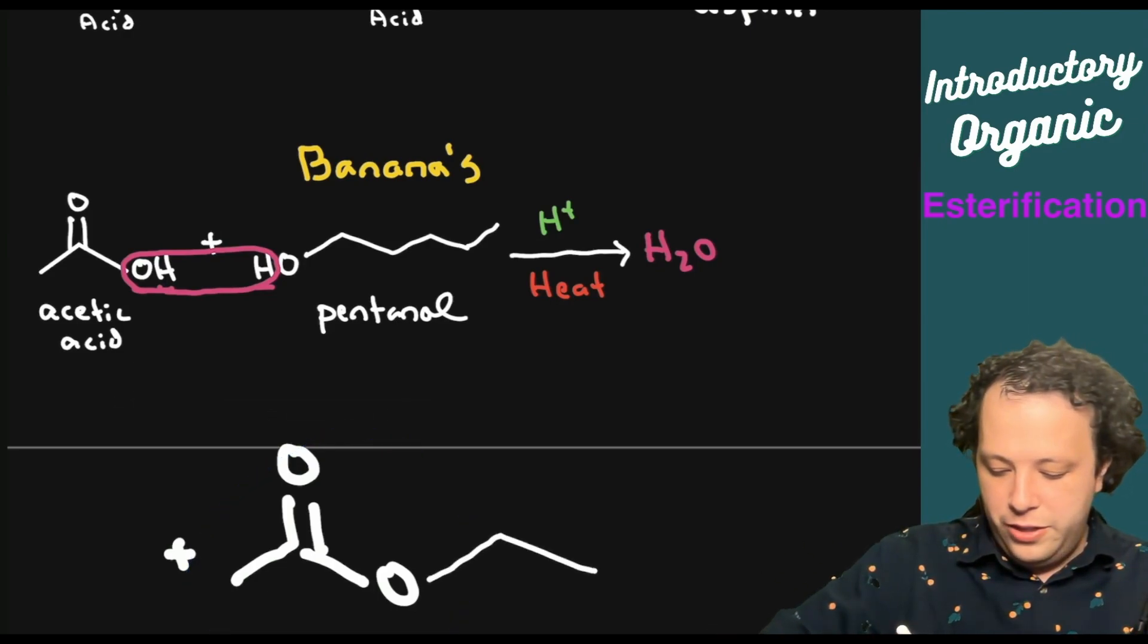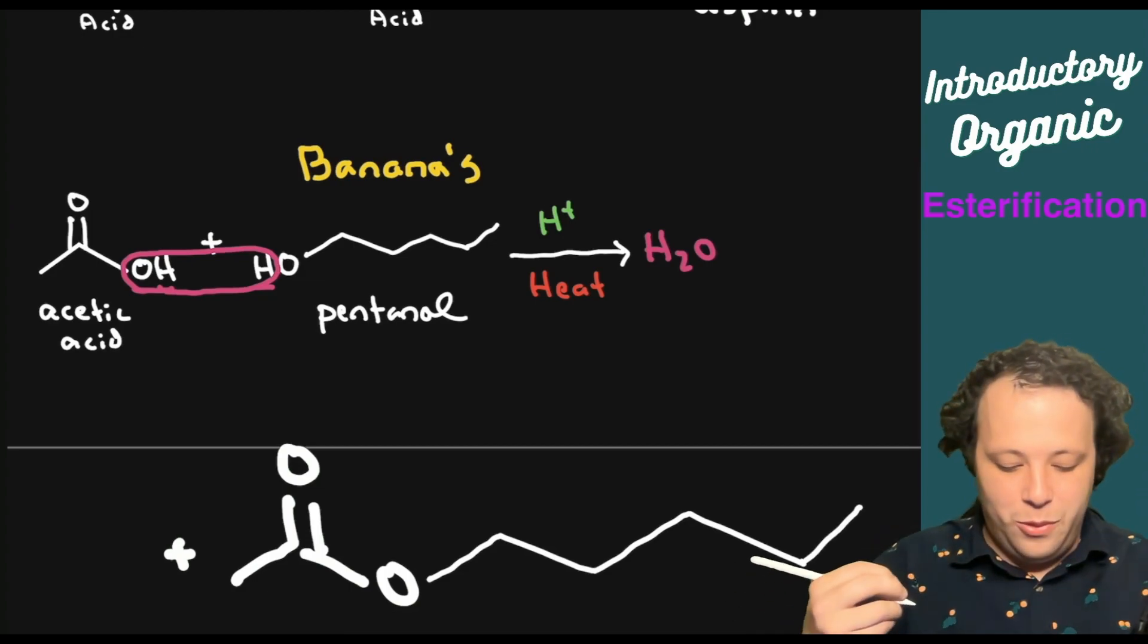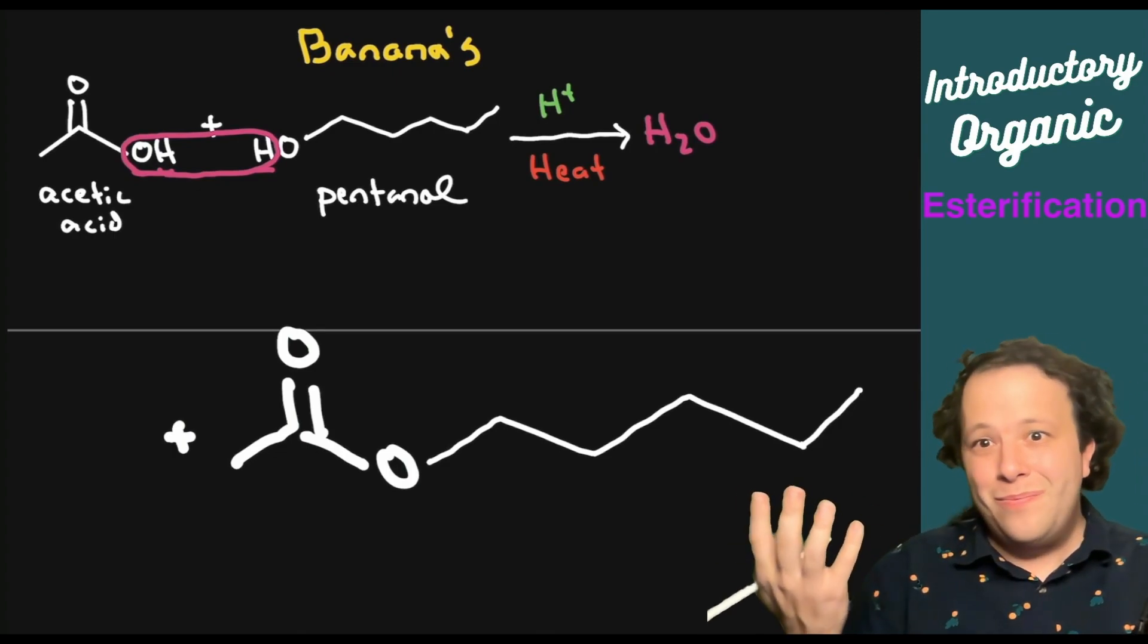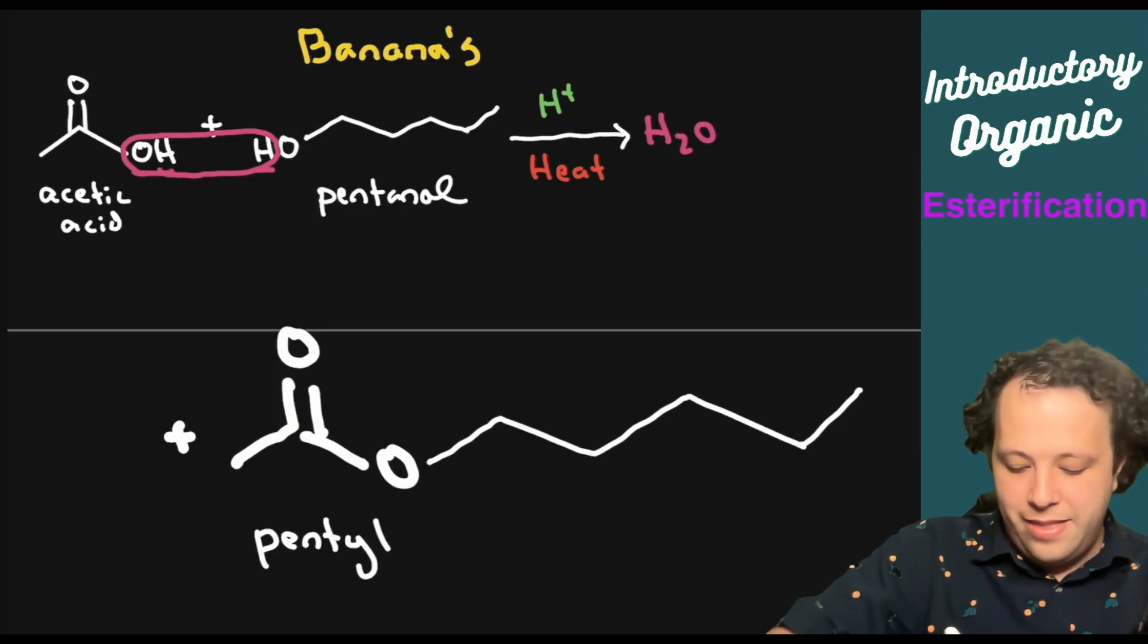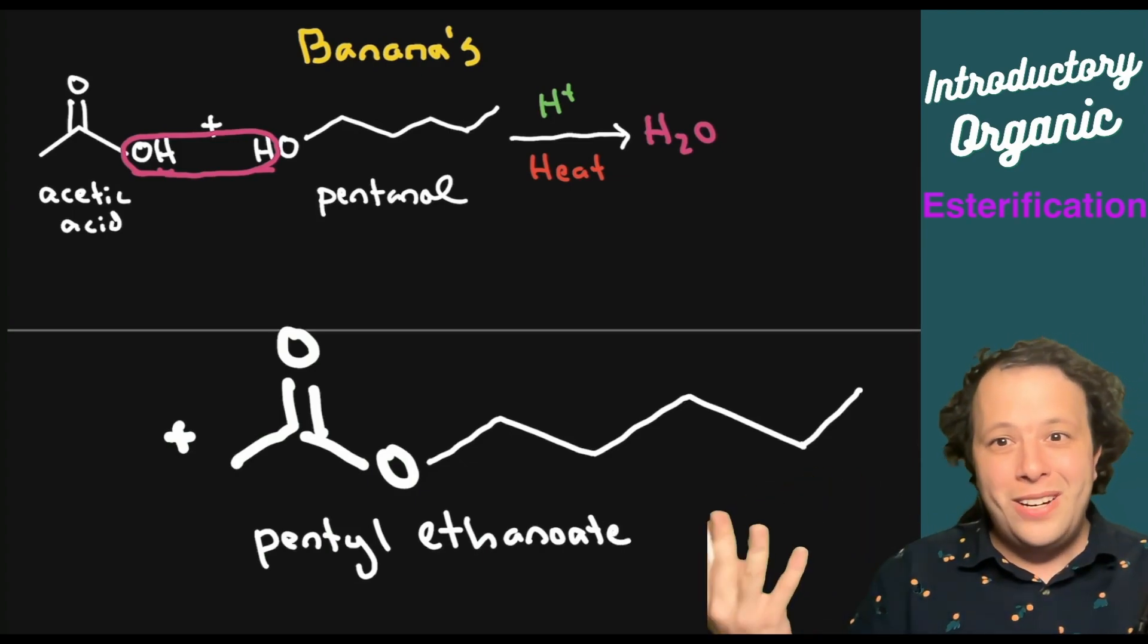So we will have one, two, three, four, five carbons for our specific chain here for our compound. And then we can see that we have made a pentyl ethanoate as our final answer or trying to name it. So we made our ester.